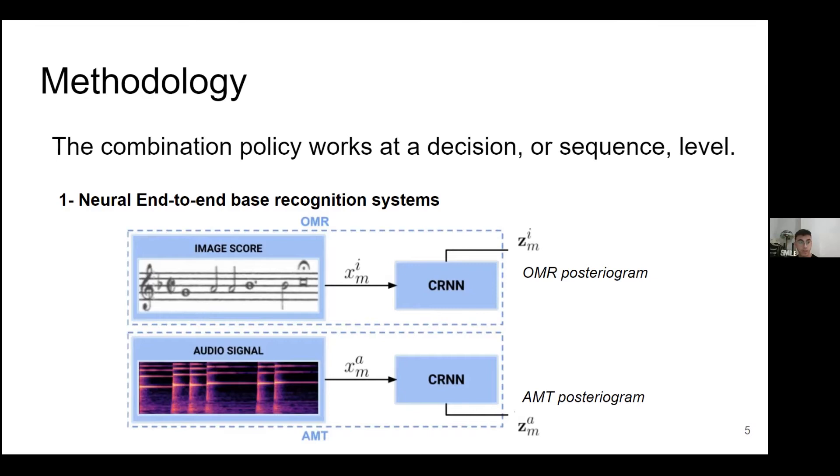The first one is a neural end-to-end based recognition system. For OMR, we introduce a sheet music image to our CRNN network and we use the loss function CTC. And at the end, we obtain a posteriorgram.